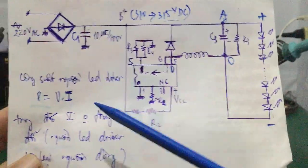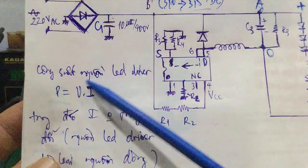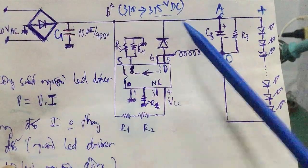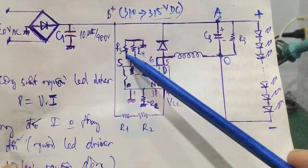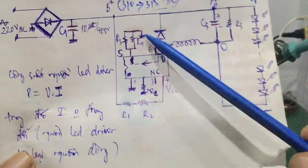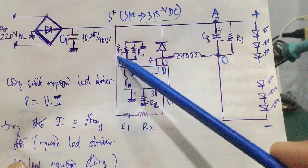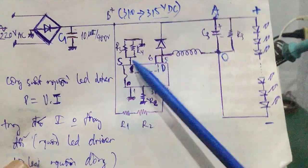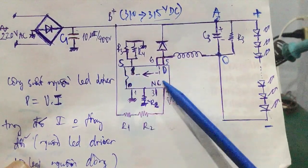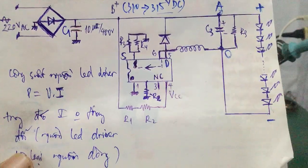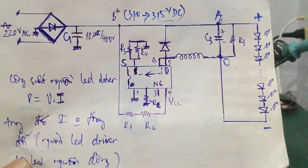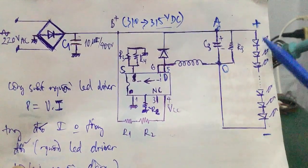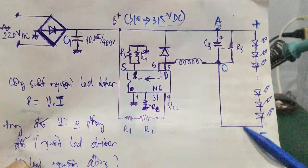Còn trường hợp muốn tăng công suất lên, vì cường độ dòng điện không thay đổi, bạn tăng điện áp lên thì công suất tăng. Hai cách trước mình đã thay đổi giá trị RF1, RF2 tại chân số 8 là chân RF của IC, và chân CS của MOSFET nằm trong IC dao động, tức là IC nguồn LED driver. Thay đổi giá trị này sẽ làm thay đổi điện áp ngõ ra cung cấp cho dãy LED.